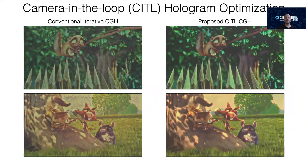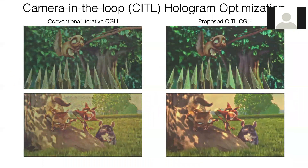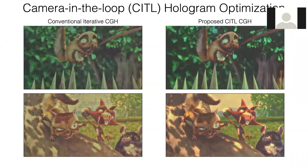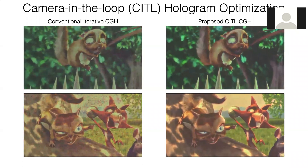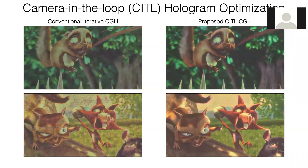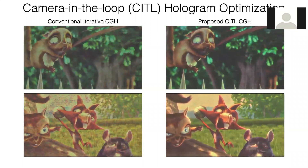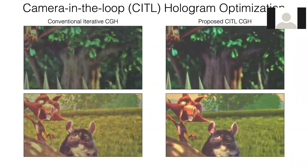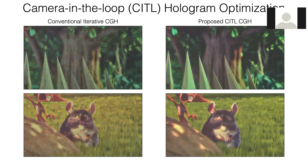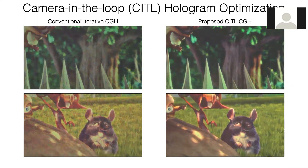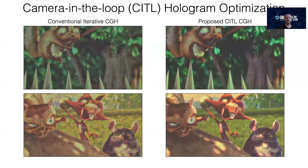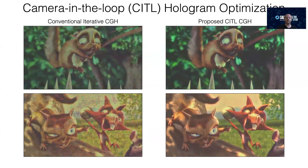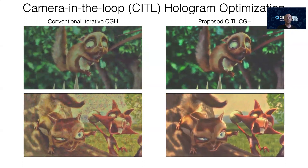Looking at a direct comparison of conventional CGH and our camera-in-the-loop approach, we see that we can achieve significantly better image quality. The colors and contrast are a lot better, noise is significantly reduced — for example on the background — and the image just looks a lot better.